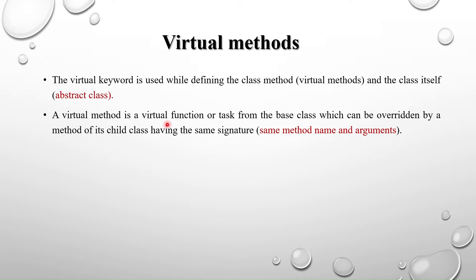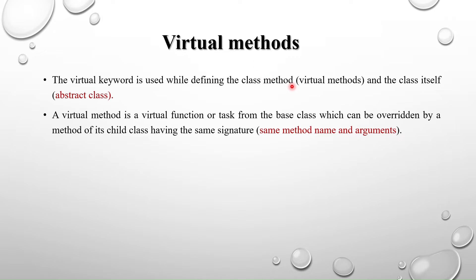In the last session I explained a code where I assigned the child class handle to the base class handle. I had the same display function in both the base class and the subclass — same method name, same arguments. When I called the method using the base class handle, b.display, I got the base class display method.